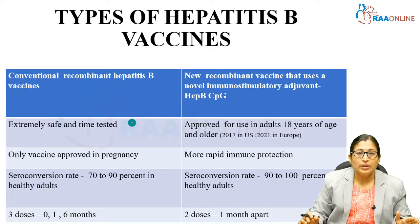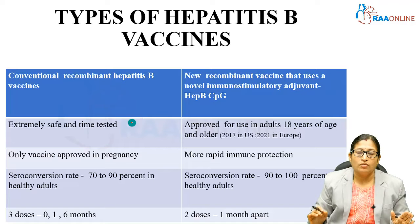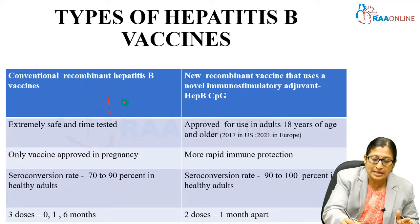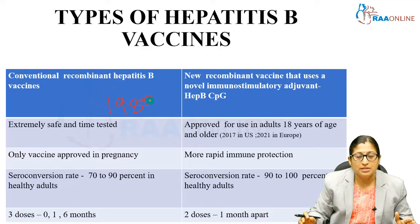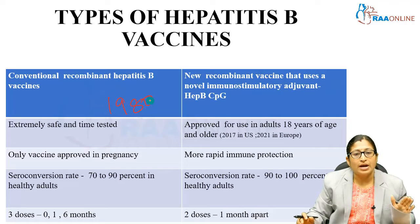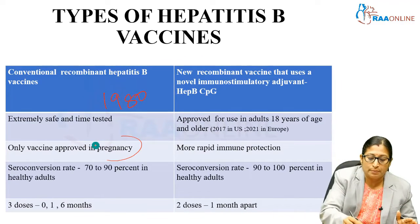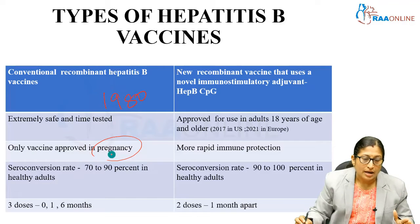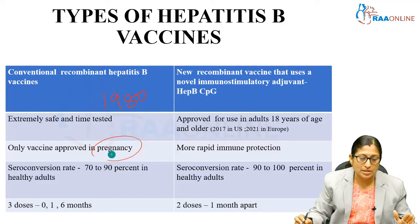Now, regarding the two major vaccines: the conventional recombinant hepatitis B vaccine has been available since 1980 — it is time-tested and extremely safe. Importantly, this is the only vaccine approved for use in pregnancy. The seroconversion rate is around 70 to 90 percent in immunocompetent healthy adults. This vaccine requires three doses at zero, one, and six months interval.